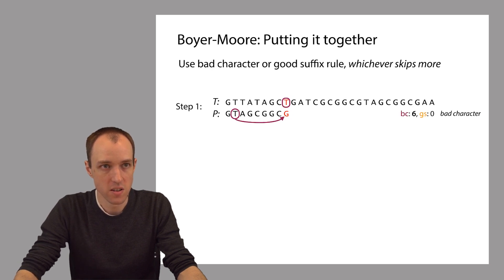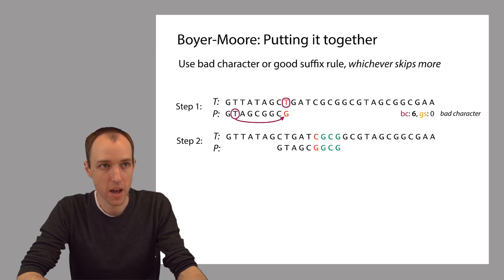So this skips six alignments. It shifts P over by seven positions, or it skips six alignments. And the good suffix rule doesn't skip at all because it's not applicable. So we're going to use the bad character rule in this case and skip over six alignments. Okay, so let's do that.